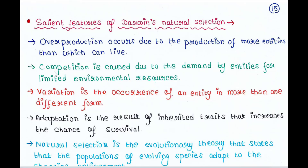Second, competition is caused due to the demand by individuals for limited environmental resources. Whenever more than 50 birds arise, they start struggling for food. Since food is limited to only 50 birds, they will compete.